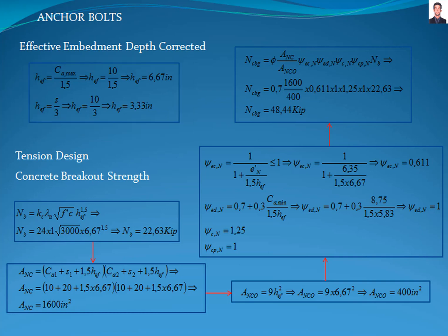Now we perform the tension design by verifying the concrete breakout strength, the concrete pull-out strength, and the concrete side-face blowout strength. This process starts by calculating the basic breakout strength NB with equation 17.6.2.2.1 of the ACI 318 standard, giving a result of 22.63 kilopounds.